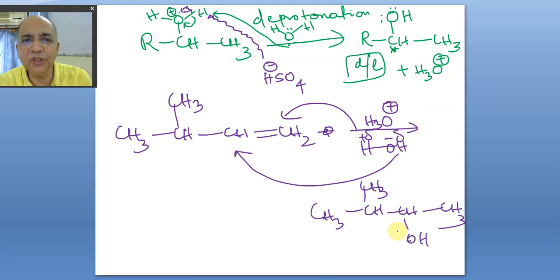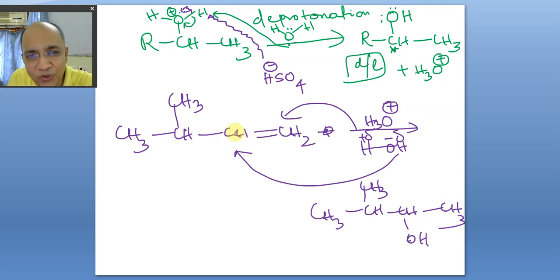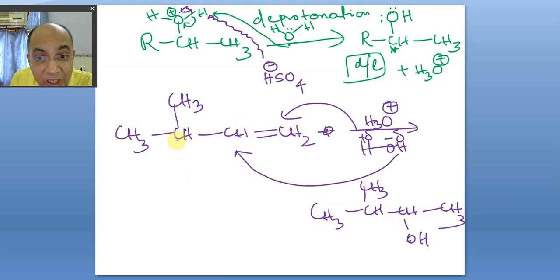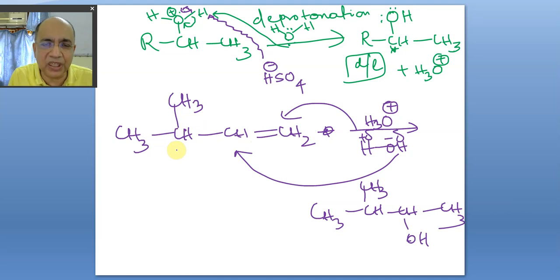When the secondary carbocation is formed, a small part reacts with water to give the expected product, but before that a hydride transfer occurs — called a 1,2-shift of hydrogen between two adjacent positions. The hydrogen migrates: a secondary carbocation is converted to a tertiary carbocation. The driving force is the greater stability of the higher-degree carbocation, which drives the C–H bond to break and the hydride to migrate very rapidly.